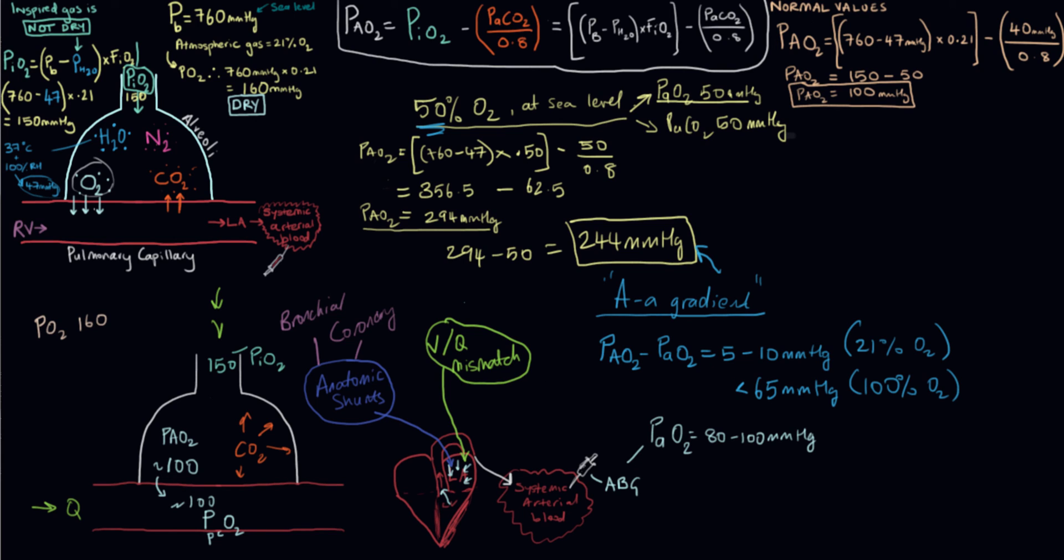But only 50 of that is making it to the arterial blood. It brings up another thing that we can do when we have these numbers. We've calculated the AA gradient, but we can also calculate the AA ratio. That's when you take your PaO2, your arterial, of 50, and we divide that by our alveolar, which we figured was 294.